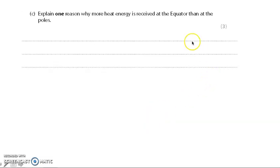Now we're going to look at the three marker. So explain one reason why more heat energy is received at the equator than at the poles. Three marks. So here you've got to extend it. One factor is this. This means that, which, that leads to, and that's important that you get that extension in for the three marks. It's often where people lose marks because they don't extend it for the three. So have a go at that. Pause the video. Have a go at that now.